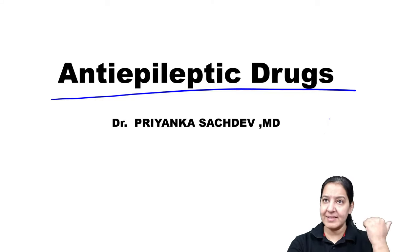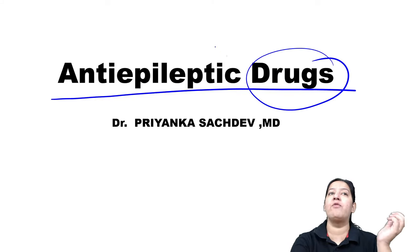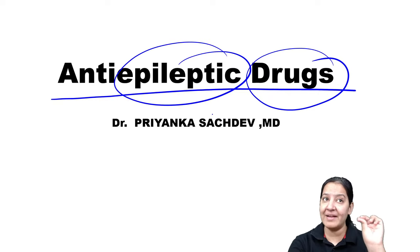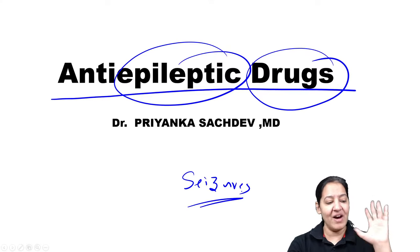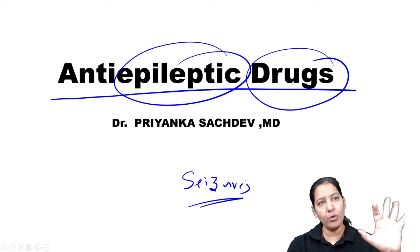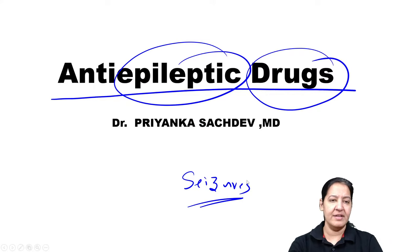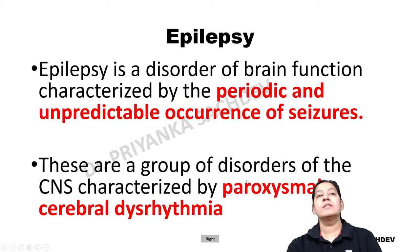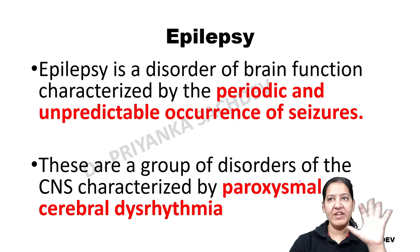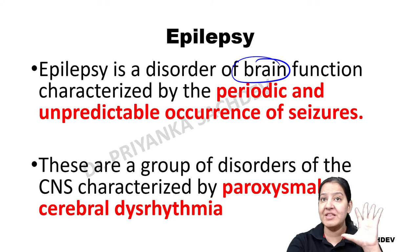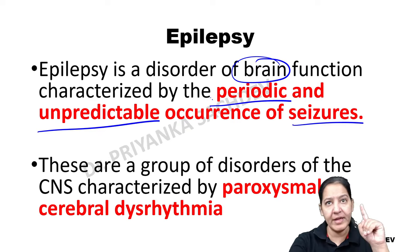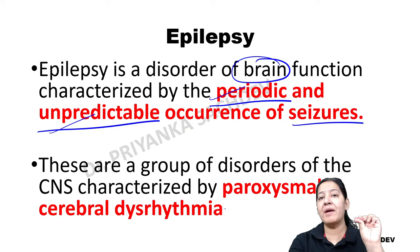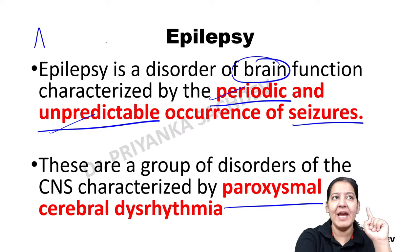Before understanding the drugs acting on epilepsy, you should understand what epilepsy is. Epilepsy is also known as seizures. The definition: epilepsy is a disorder of brain function characterized by periodic and unpredictable occurrence of seizures. The patient has periodic seizures but it is unpredictable — it can come any time. It is a paroxysmal disorder.